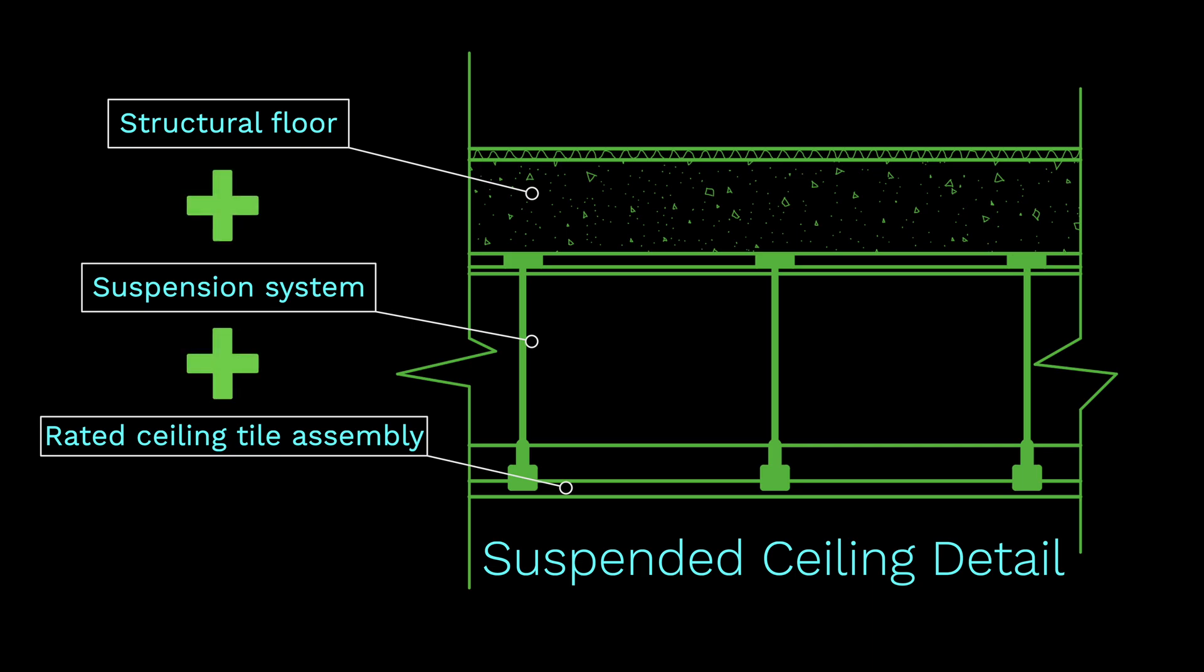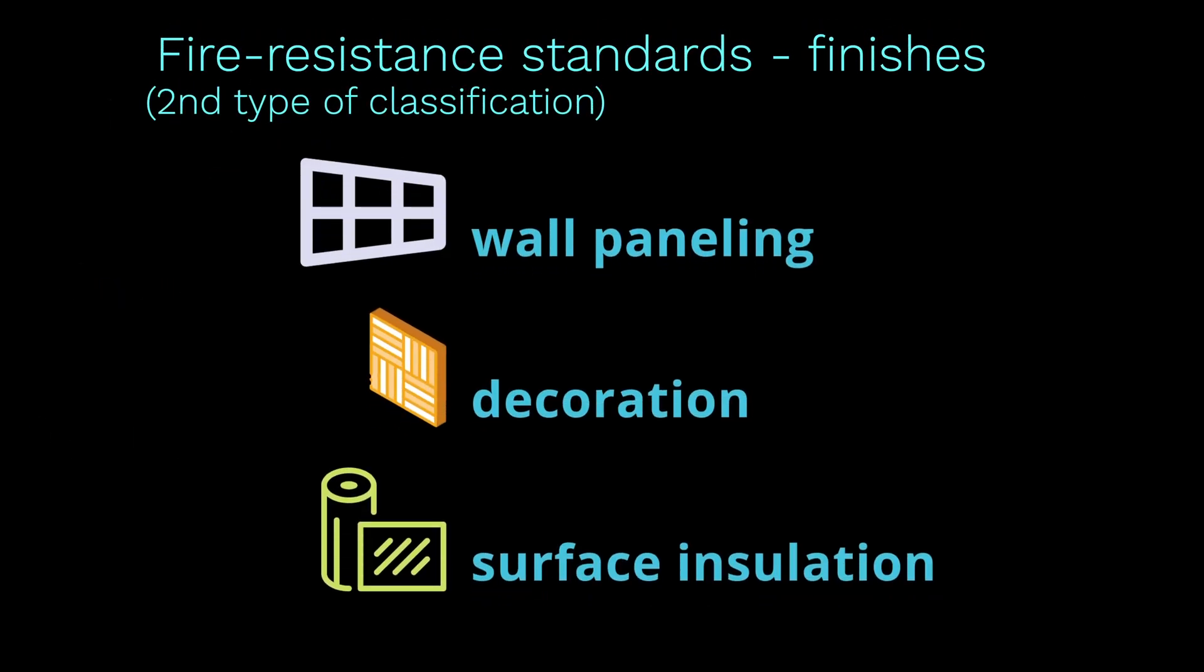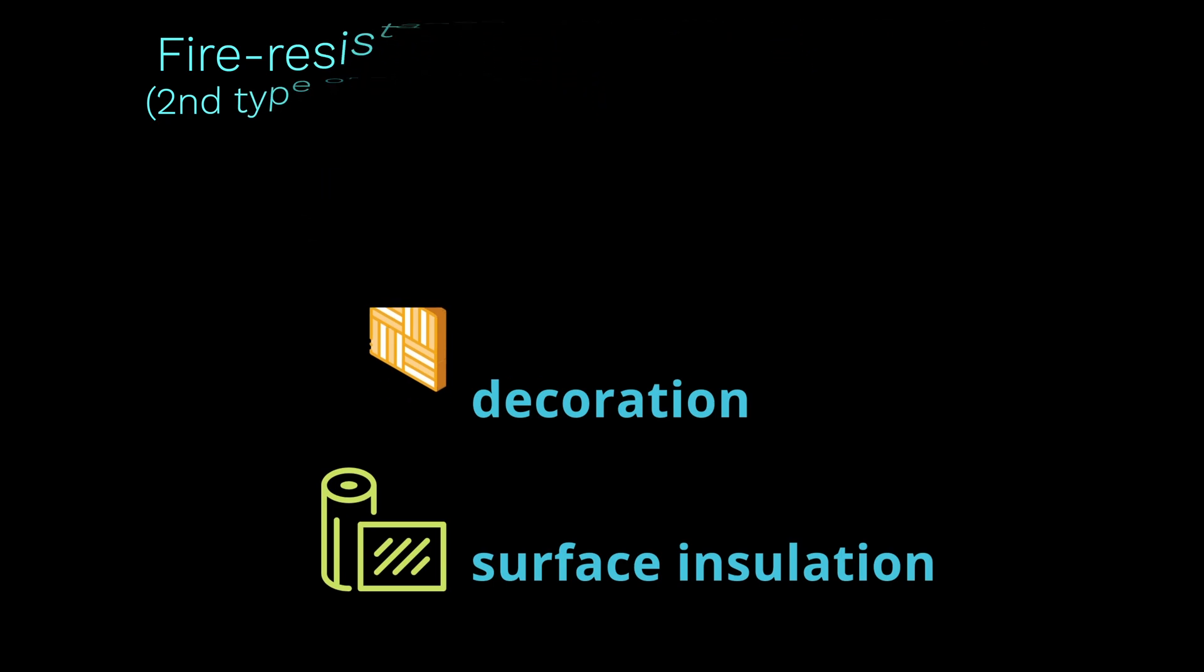The second type of fire resistance classification is the building's finishing. Finishings are rated by ASTM E84. This type aims to moderate the amount of combustible finishes in a building and control the fire spread rate.